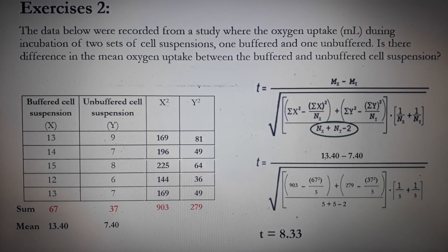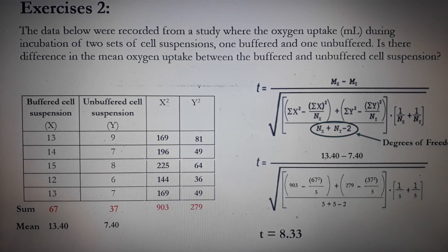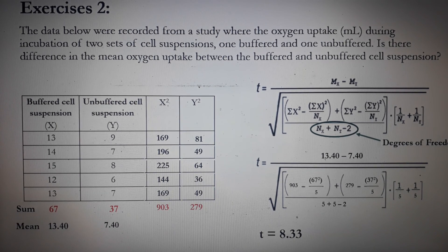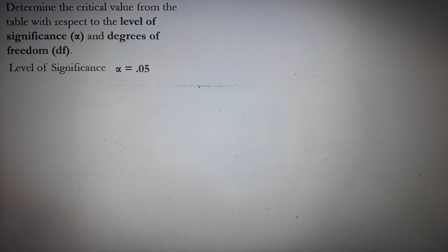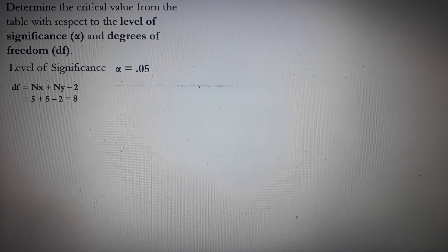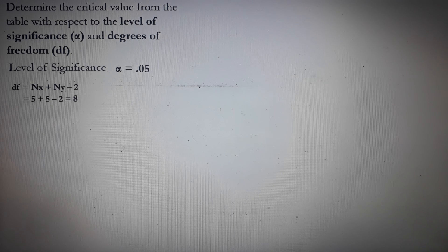Notice that the n of x plus n of y minus 2 is actually our degrees of freedom, which will be used in finding the critical value later. So next, determine the critical value from the table with respect to the level of significance and degrees of freedom. The level of significance is commonly, that's the alpha, .05. The degrees of freedom is equal to the n of x plus n of y minus 2. So that's 5 plus 5 minus 2 equals 8.